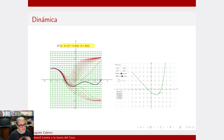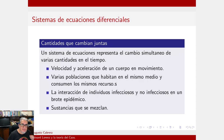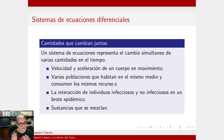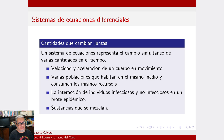El sistema de Lorenz es uno de estos sistemas caóticos. Una ecuación diferencial modela una cantidad que cambia en el tiempo, pero podemos tener sistemas de varias ecuaciones diferenciales, o ecuaciones diferenciales con derivadas de orden mayor que uno, que podemos pensarlas siempre como un sistema de varias derivadas. Son distintas cantidades que cambian en el tiempo de forma simultánea, y podemos representarlas como un solo sistema.